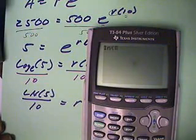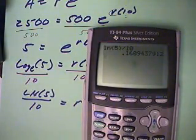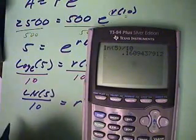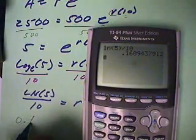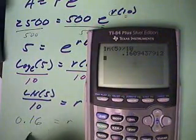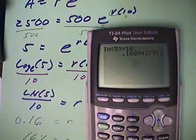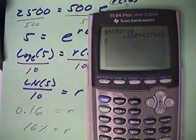Natural log of 5, close parentheses, divided by 10. And we get 0.16, which implies our interest rate is 16%.